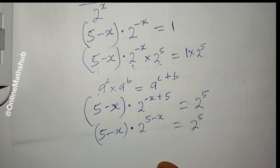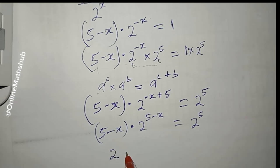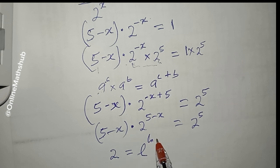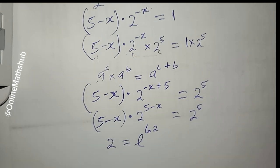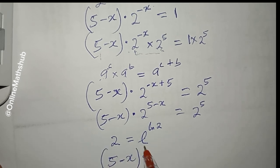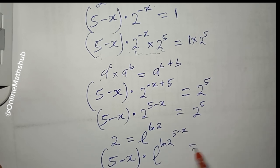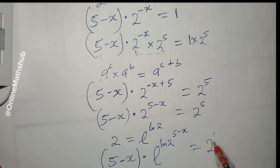To introduce the exponential form, we write 2 as e^(ln 2), since e^(ln 2) = 1 · 2 = 2. Replacing 2^(5 − x) with (e^(ln 2))^(5 − x) and noting 2^5 = 32, the equation becomes (5 − x) · e^(ln 2 · (5 − x)) = 32.